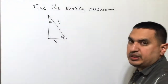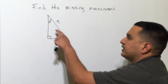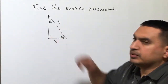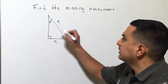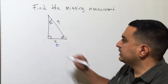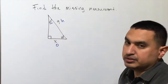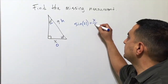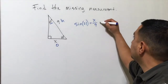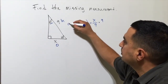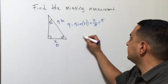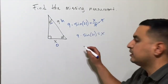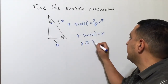Now let's find missing side lengths. Using the 21° angle: x is the opposite leg and 9 is the hypotenuse. So sine of 21° = x/9. Multiplying both sides by 9 gives x = 9 × sin(21°). Plugging into the calculator, x ≈ 3.23.